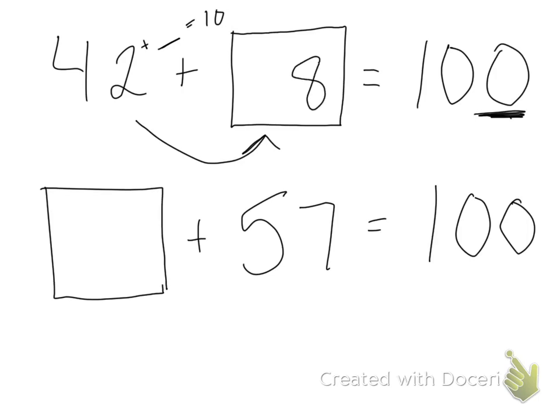Then I need to think, 4 plus what equals 9, because I'm going to get a number from here. I know that 4 plus 5 equals 9. So, 42 plus 58 equals 100.